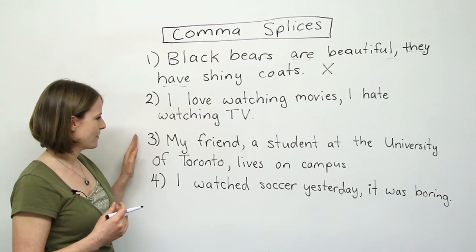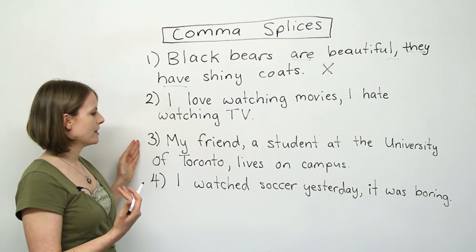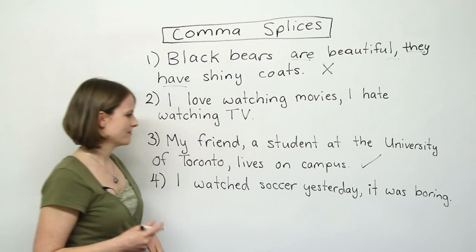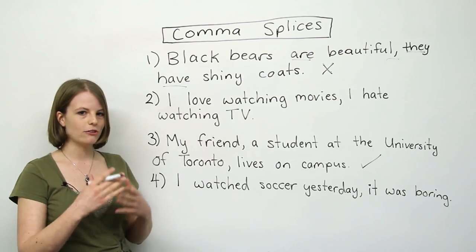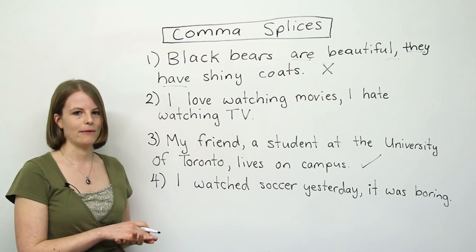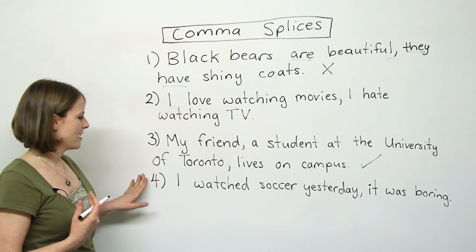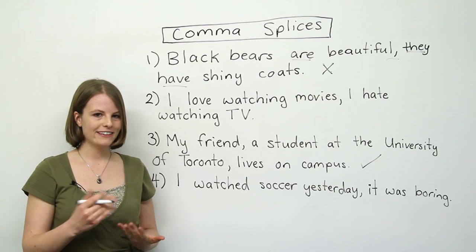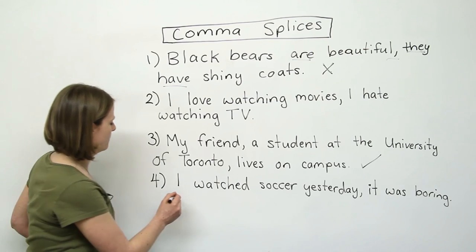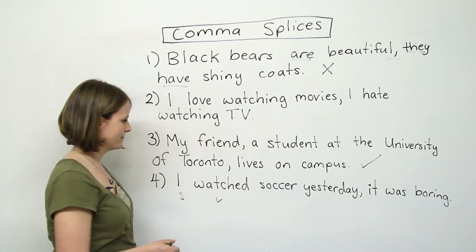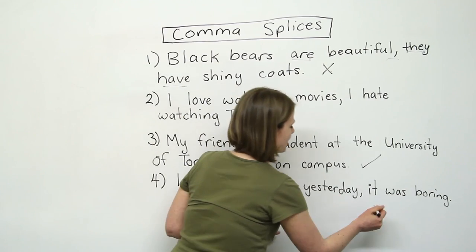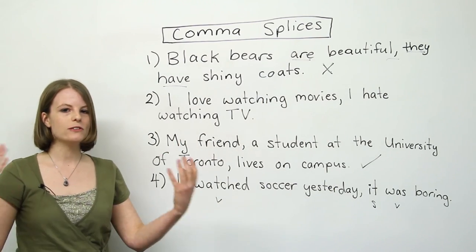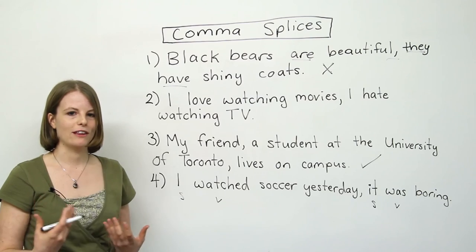Number three — 'my friend, a student at the University of Toronto, lives on campus' — is actually correct. You can give it a big checkmark. We're not making a comma splice mistake; we don't have two separate sentences combined with a comma. Finally, number four: 'I watched soccer yesterday, it was boring.' You have the subject 'I' and a verb in the first sentence, and in the second sentence 'it' is a subject with a verb. So again, you have two separate sentences that have just been combined with a comma — that's a comma splice.